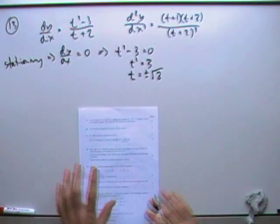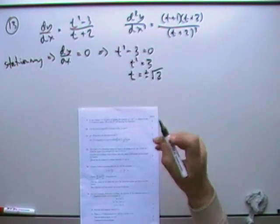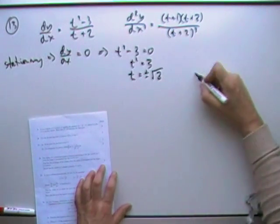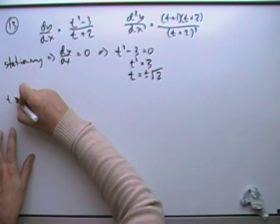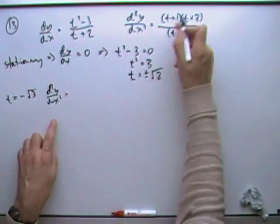Now it says just the values of t, luckily you don't have to go back in and feed that in to find the actual x and y coordinates. So the values of t are plus or minus root 3. Determine their natures: well that comes from the second derivative. So take them in order. If t is negative root 3, what's the second derivative, what's its value? So put it into the brackets.